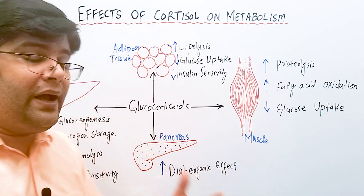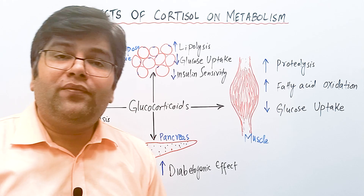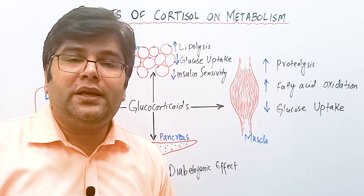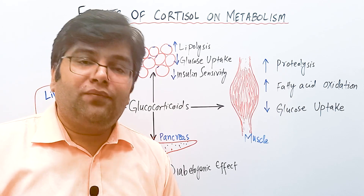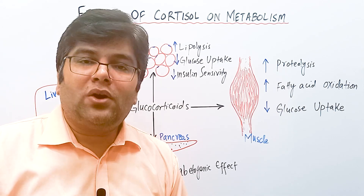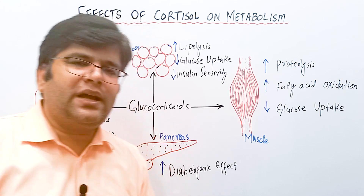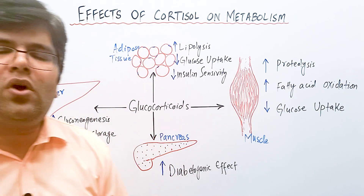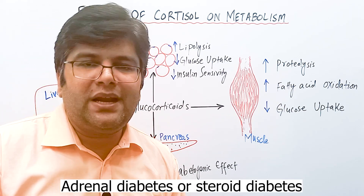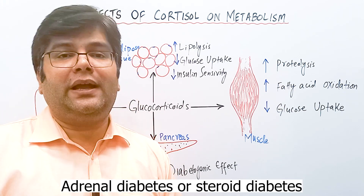Very high levels of cortisol, if chronically elevated — for example in Cushing syndrome — can cause diabetes mellitus. This kind of diabetes is called adrenal diabetes or steroid diabetes.